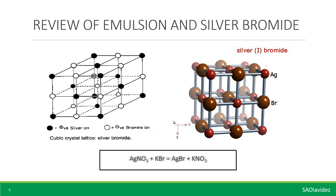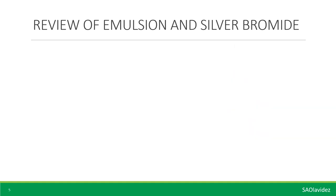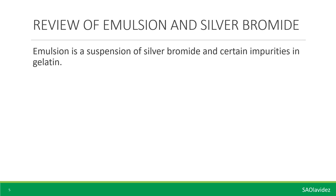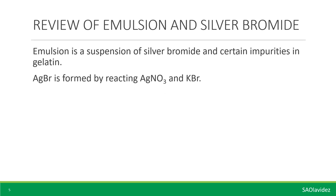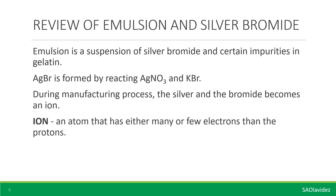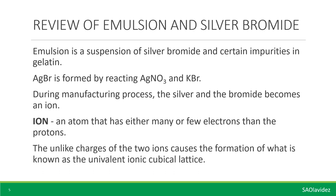Although this may sound negative, these impurities are necessary for latent image formation. To summarize: emulsion is a suspension of silver bromide and certain impurities in gelatin. Silver bromide is formed by reacting silver nitrate and potassium bromide. During the manufacturing process, the silver and the bromide become ions. An ion is defined as an atom that has either more or fewer electrons than protons. The unlike charges of the two ions cause the formation of what is known as the univalent ionic cubical lattice formation.